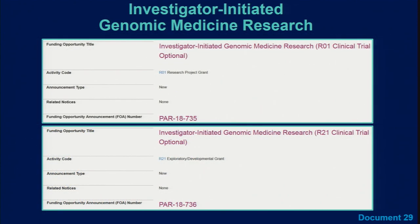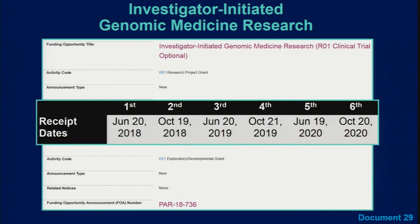In April, NHGRI released two program announcements to stimulate investigator-initiated genomic medicine research. The PARs — one for R01s and one for R21s — aim to support research that will advance our understanding and implementation of the use of genomic information about an individual to inform clinical care, as well as the health outcomes of that clinical use. The PARs will have six application dates over three years, the first of which is June 20th of this year.